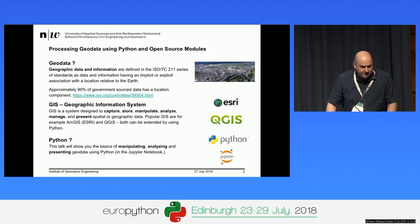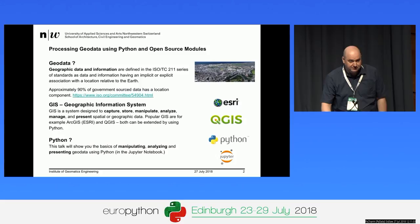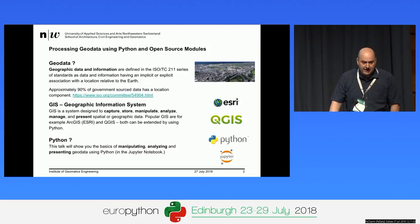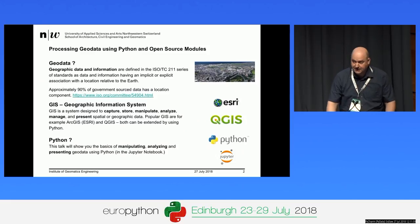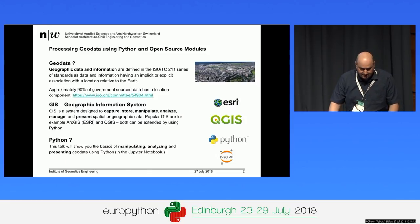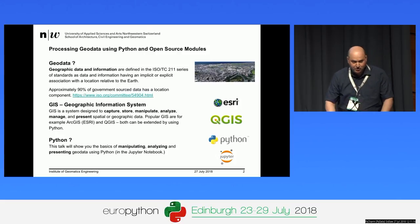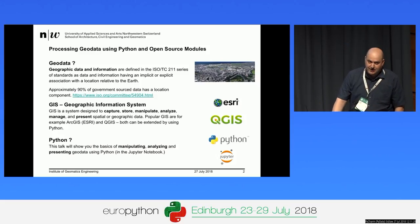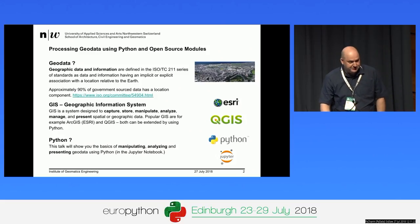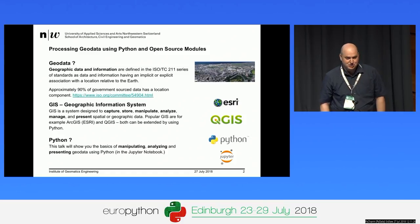There are many different geographic information systems available today. I want to highlight two: ArcGIS from Esri, and QGIS. Both can be extended using Python. However, I will not talk about geographic information systems today. I want to show you how to process geodata using Python in a Jupyter notebook.